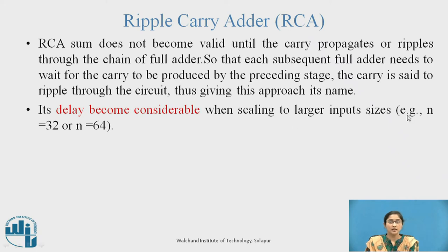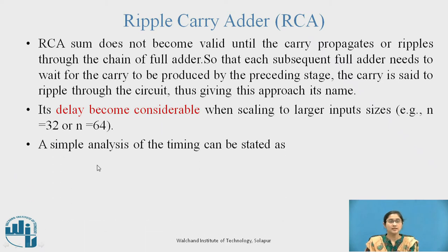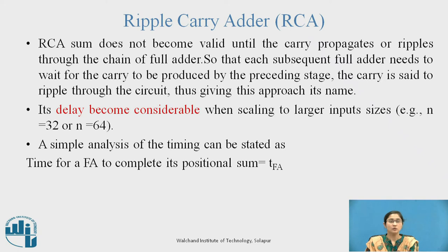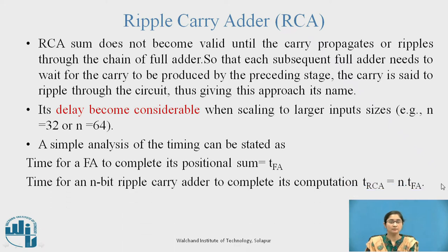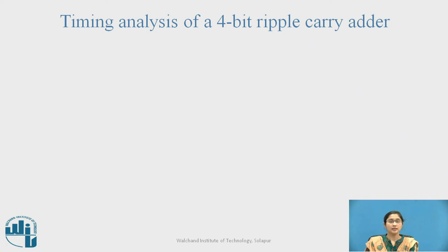For example, instead of N = 4-bit, if we take 32-bit or 64-bit, the delay becomes considerable. A simple analysis of timing can be stated as: if the time for a full adder to complete its positional sum is T_FA, then the time for an N-bit Ripple Carry Adder to complete its computation, T_RCA, is equal to N × T_FA. This leads to the timing analysis of the 4-bit Ripple Carry Adder.